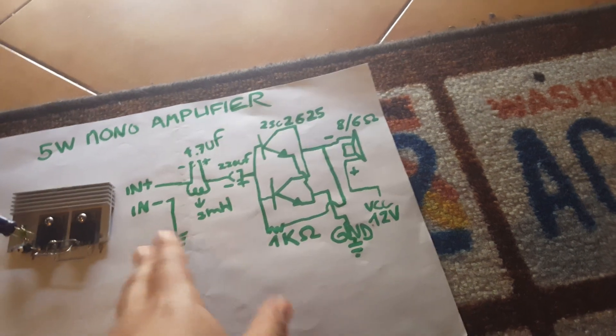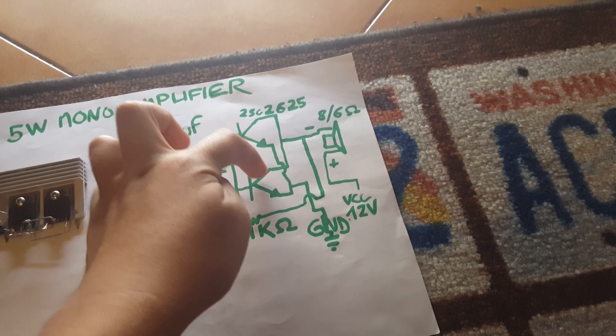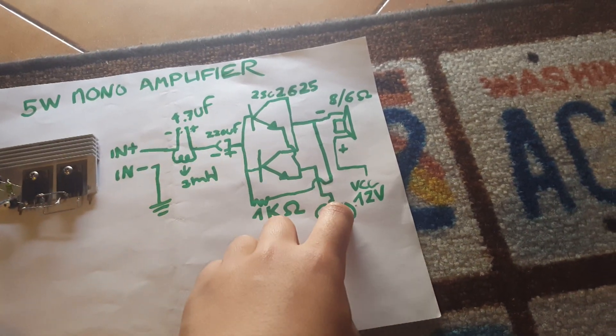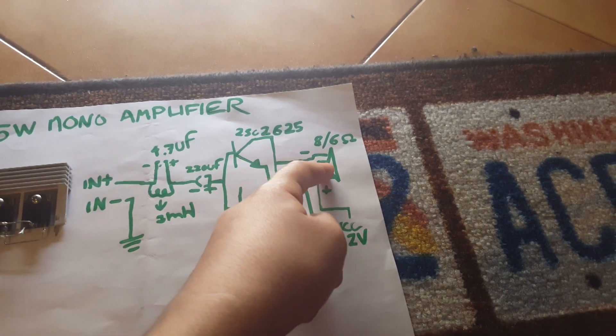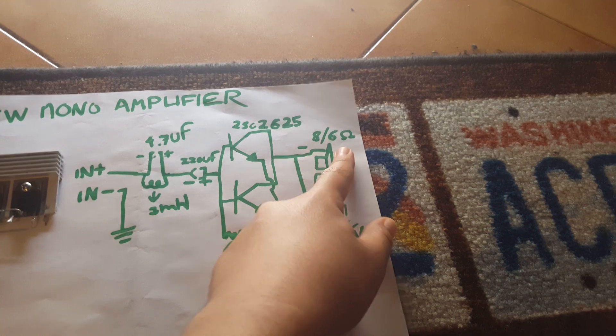You must connect them in parallel, so bass to bass, collector to collector and emitter to emitter. The emitter goes to ground. The collector connects to the minus terminal of the speaker, which must be 8 or 6 ohm.